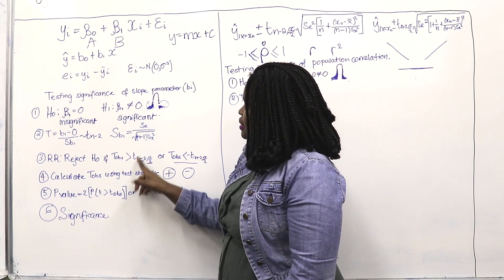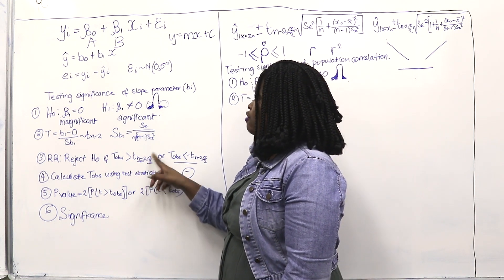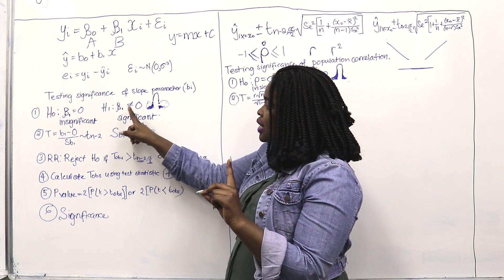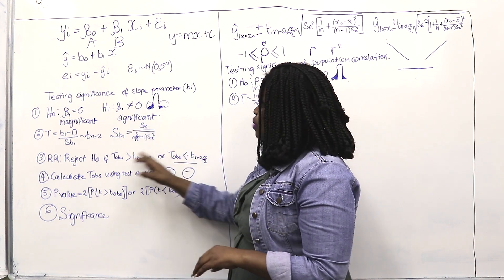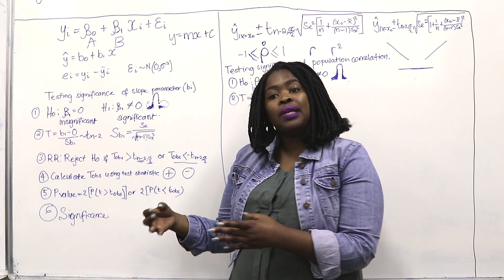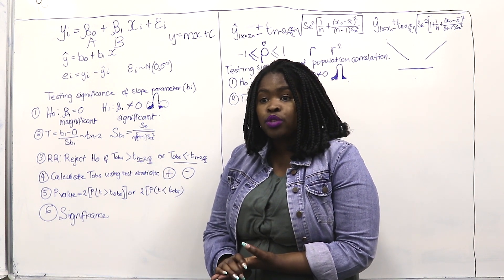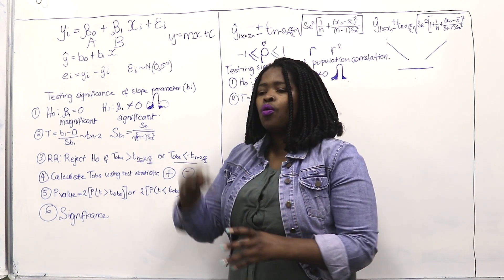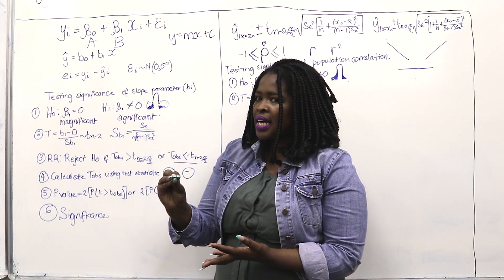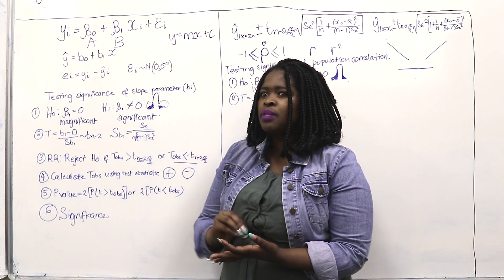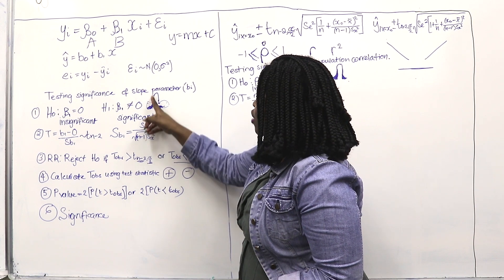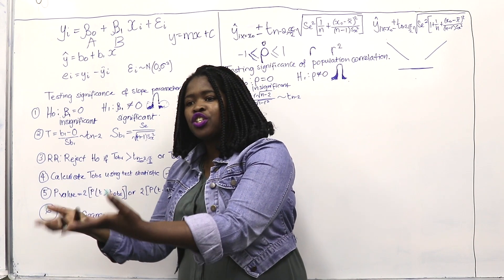Once you have degrees of freedom, you use alpha over 2 — not alpha, but alpha over 2 — because it is a two-sided test. Once you have that value, you look it up in the T-table, Table number 3. If you have the degrees of freedom, you get a T critical value.